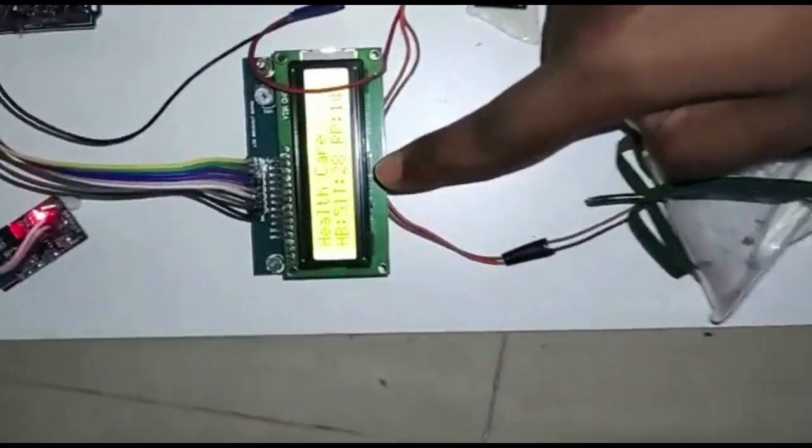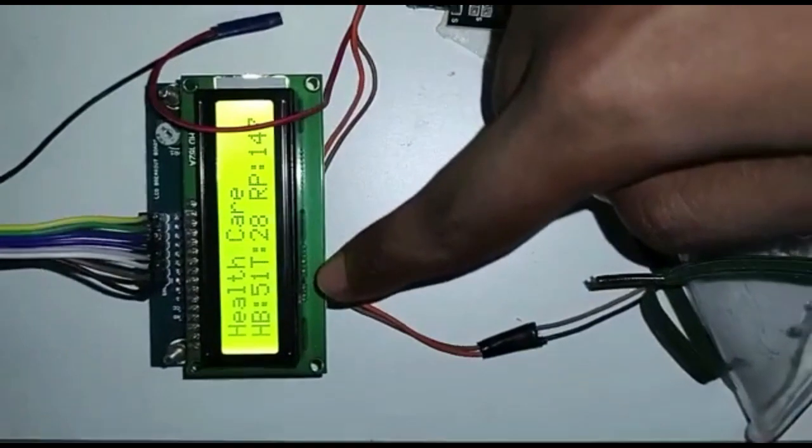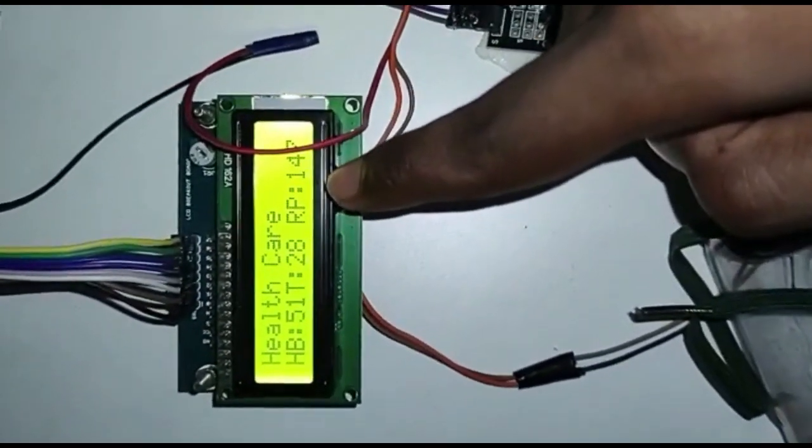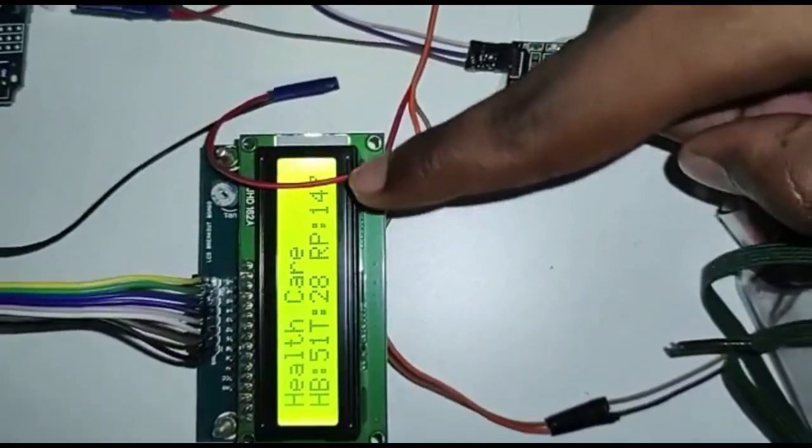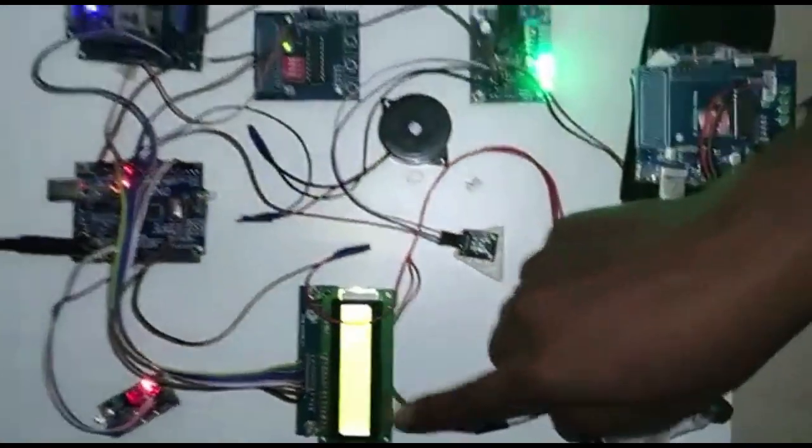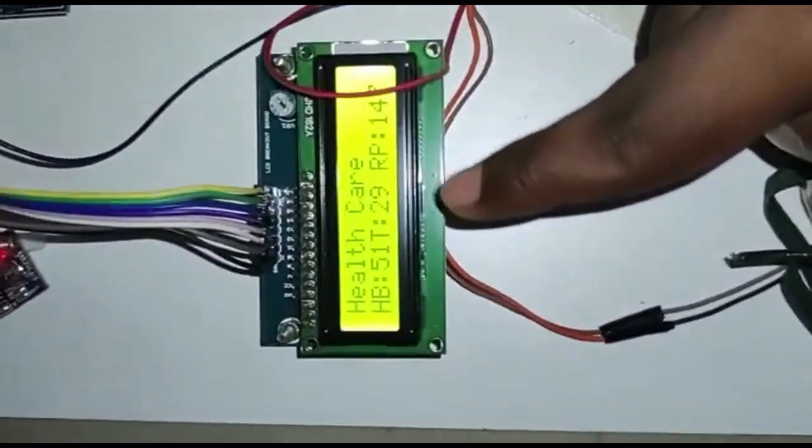This is an output display which will display the heartbeat value, temperature value, and respirator breathing value of the baby. When it exceeds the nominal value, it will trigger the alarm.